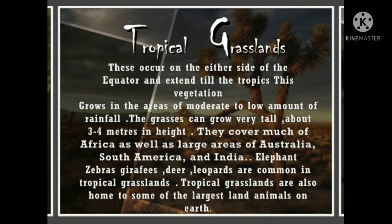Tropical grasslands occur on either side of the equator and extend till the tropics. This vegetation grows in areas of moderate to low rainfall. The grasses can grow very tall — about 3 to 4 meters in height. They cover much of Africa as well as large areas of Australia, South America and India. Elephants, zebras, giraffes, deer and leopards are common in tropical grasslands, which are home to some of the largest land animals on earth.